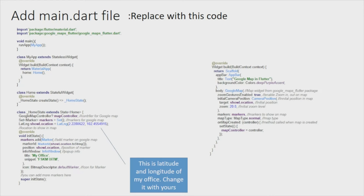Next, in your main.dart file, replace the existing code with the new code. After doing pub get on the dependency, you're now able to import the Google Maps package. We use the same package as the previous Google Map tutorial. Previously we just displayed and navigated to a certain location, but in this tutorial we want to add a marker on our Google Map. It still uses the main function and a StatelessWidget, which calls the Home class.